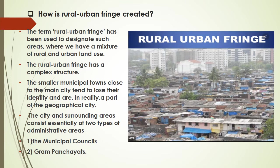The rural urban fringe has a complex structure and a big diversity. Under a single area you can see qualities of both urbanization and ruralization.